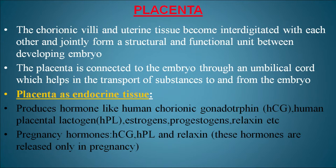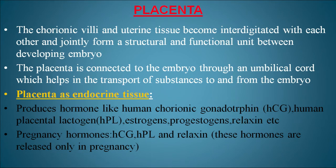An important structure in pregnancy is the placenta. The chorionic villi and uterine tissue become interdigitated with each other and jointly form a structural and functional unit between the developing embryo and the mother. The placenta is connected to the embryo through an umbilical cord, which helps in transport of substances to and from the embryo.